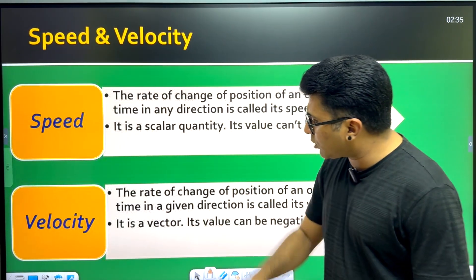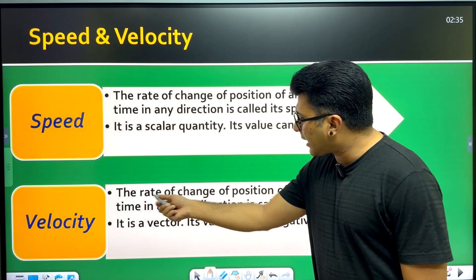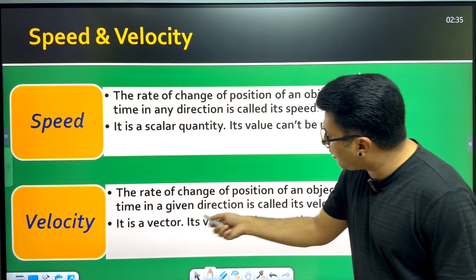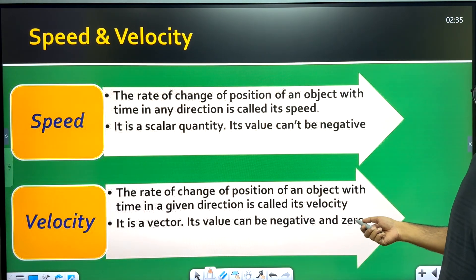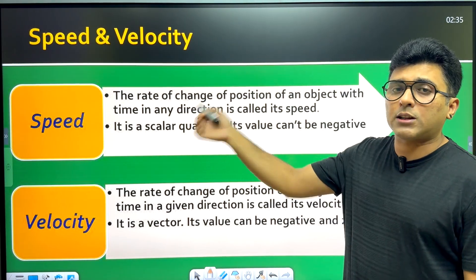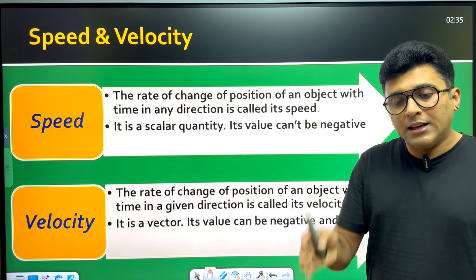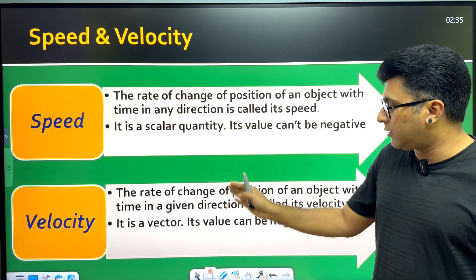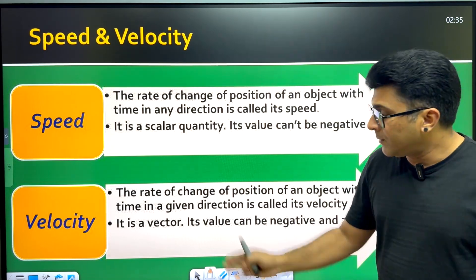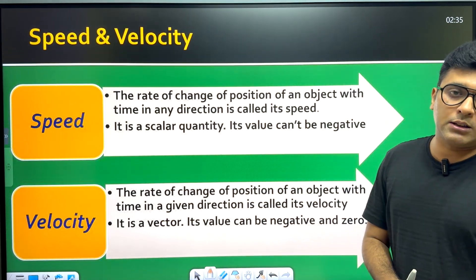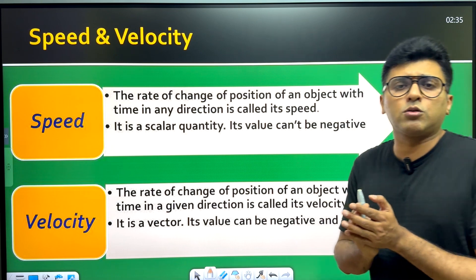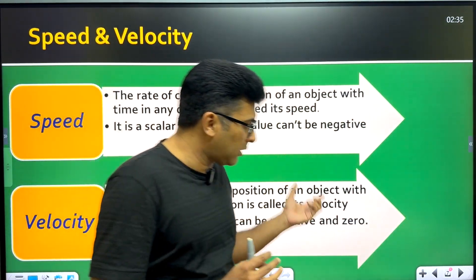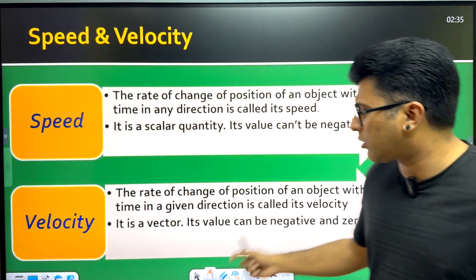Next is velocity. The rate of change of position of an object with time in a given direction is called its velocity. If we include a fixed direction with speed, that becomes velocity. Velocity is a vector quantity, so it can be positive, negative, or zero.